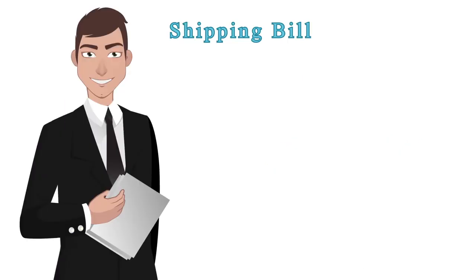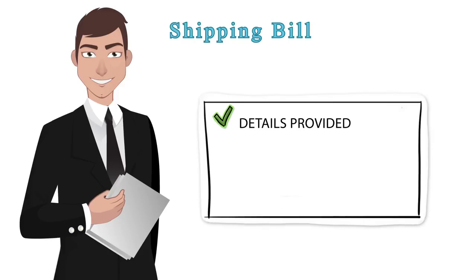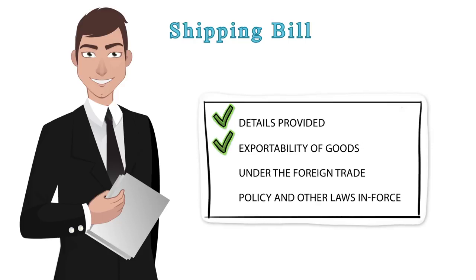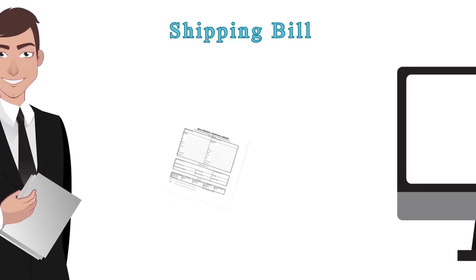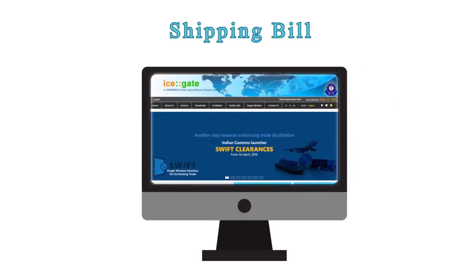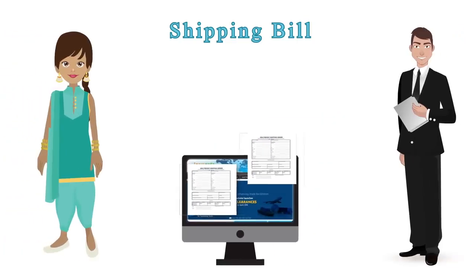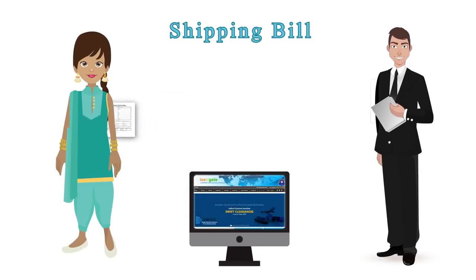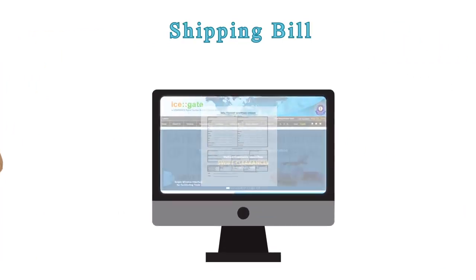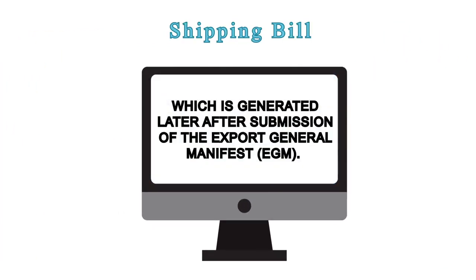The Assessing Officer in the Export Department checks the details provided and the exportability of goods under the Foreign Trade Policy and other laws in force. After the let-export order is given by the Customs Officer, the shipping bill is generated by the system in two copies — one Customs copy and one Exporter's copy. There is a third copy, the EP copy, which is generated later after submission of the Export General Manifest (EGM). We shall discuss them in detail later.